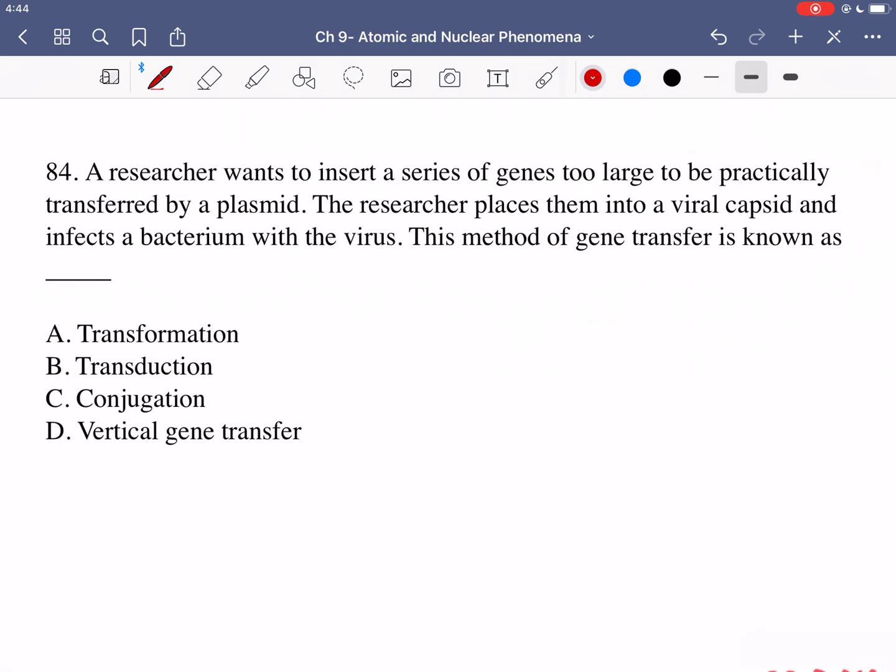In question 84 it says a researcher wants to insert a series of genes too large to be practically transferred by a plasmid. The researcher places them into a viral capsid and infects the bacterium with the virus. This method of gene transfer is known as blank. So we have a method of gene transfer and we used a viral capsid and infected a bacterium. Note that we didn't use a plasmid. So what type of gene transfer is this?